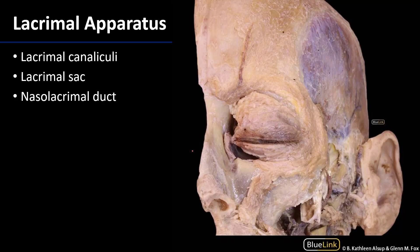The puncta feed into the canaliculi, which very typically come together and drain into the lacrimal sac, though they can drain independently as well. We can see the inferior canaliculus and the superior canaliculus here coming together in a common trunk. The lacrimal sac sits in the lacrimal fossa of the lacrimal bone, and this sac is contiguous with the nasolacrimal duct, which conducts tears down into the nasal cavity to help moisten the nasal mucosa.